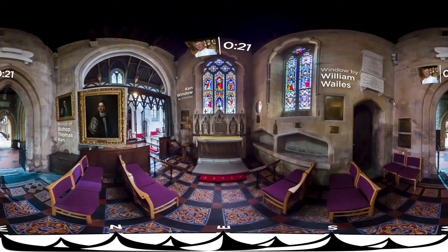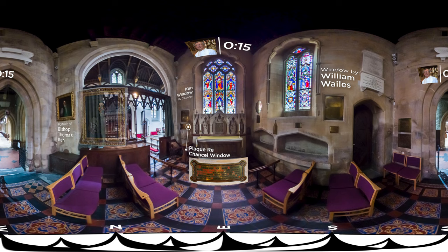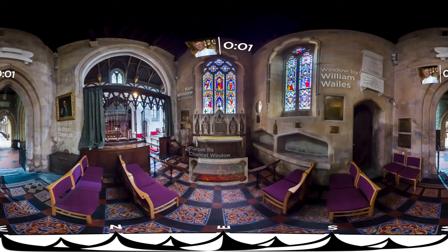On the east wall, a plaque notes Bennett's personal gift of the east window of the chancel, in memory of his son who died in Burma and his daughter who died in the Punjab. Bennett had removed plaques commemorating other individuals from the chancel as a matter of principle, and so even the plaque relating to his own gift is discreetly located outside the chancel.